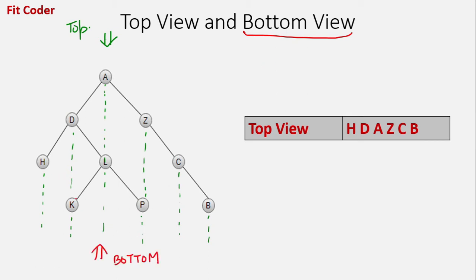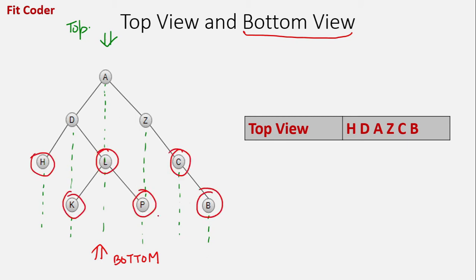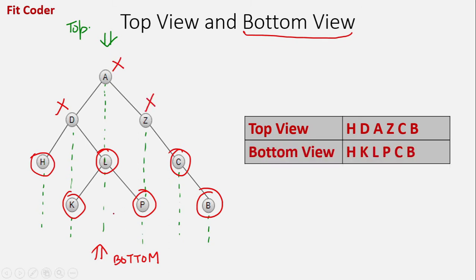The bottom view consists of those nodes which are visible when we view the tree from the bottom. The nodes that would be visible are H, K, L, P, C, and B, because D will be hidden by node K, A will be hidden by node L, and Z will be hidden by node P.